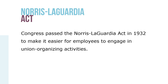Congress passed the Norris-LaGuardia Act in 1932 to make it easier for employees to engage in union organizing activities. Before the passage of the Act, employers had all the power when it came to how workers were treated. They could have federal courts issue injunctions in cases involving or resulting from labor disputes if employees wanted to strike or otherwise interfere with the flow of work.